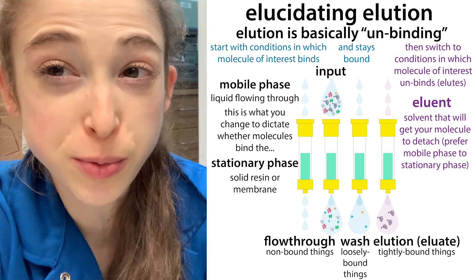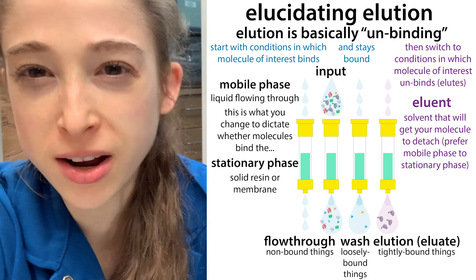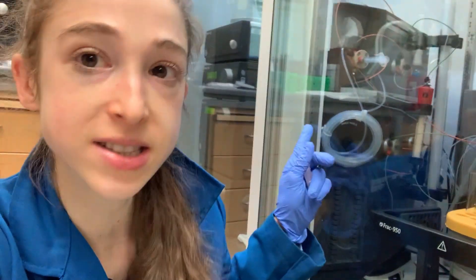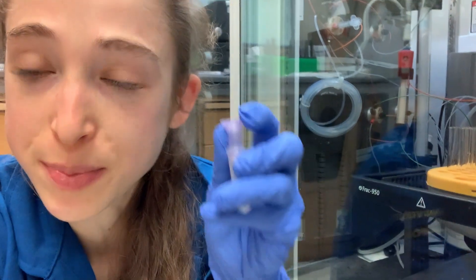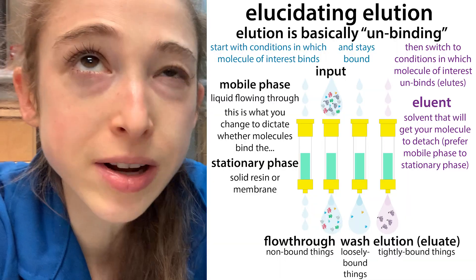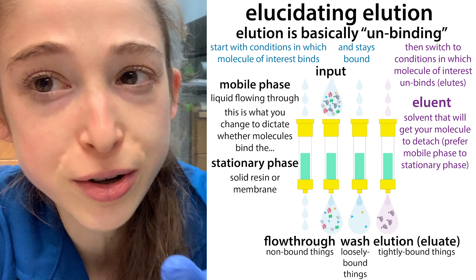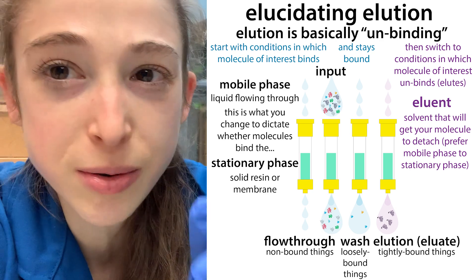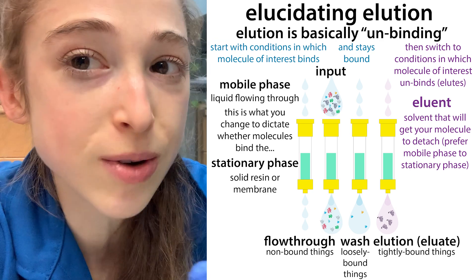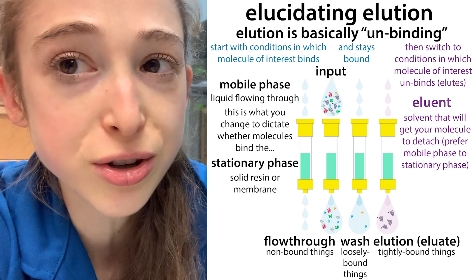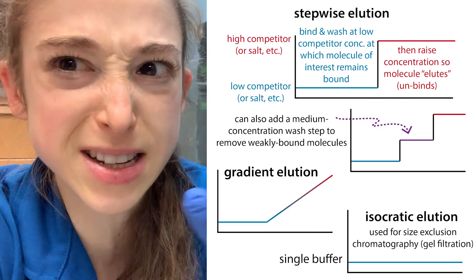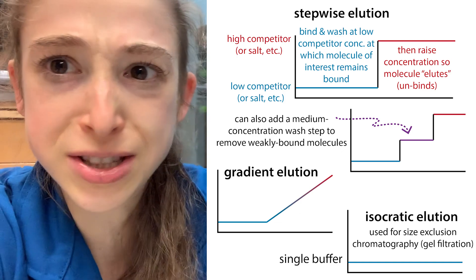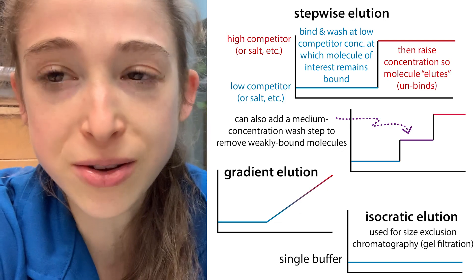Elution is basically just a fancy word for unbind or come off. It can refer to our proteins coming off of a column in protein chromatography, or nucleic acids coming off of one of these little membrane spin columns. I want to tell you about some of the terminology as well as various strategies we can use when we do elution — things like stepwise gradients, gradients, and isocratic elution.